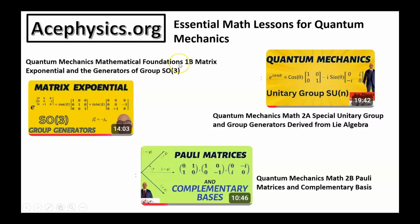Lesson 1b, the matrix exponential and the group SO(3). This is a clear, accessible breakdown of the matrix exponentials and their connection to the rotation group, a concept that shows up again and again in quantum mechanics.